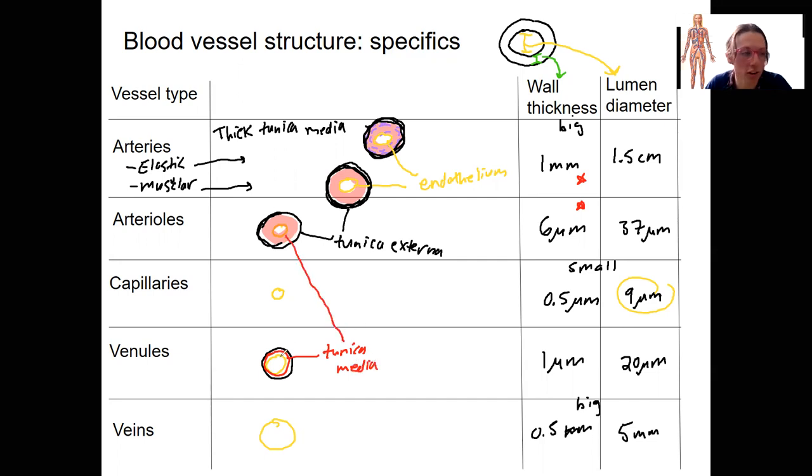As we get to veins, basically the same idea as our venules, but we're getting a little bit bigger. Again, a little bit more smooth muscle than our venules had. Let's color this in. Let's just color these in too, just to make it consistent. All my smooth muscle is this dark red now. This one is, but I want to leave my elastic fibers in there.